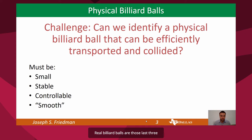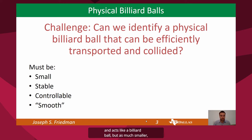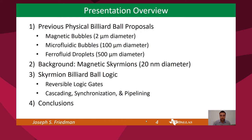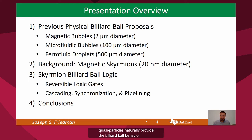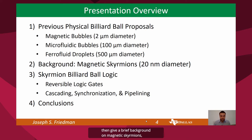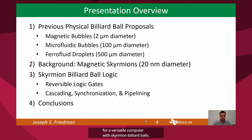Real billiard balls are those last three, but are not nearly small enough for a practical computer. The question then is: can we find a physical object that looks like a billiard ball and acts like a billiard ball, but is much smaller and can be moved with much less energy? The answer is yes. Over the last 40 years, there have been several proposals for microscale billiard balls, but they are not small enough for practical reversible computing systems. My group identified that magnetic skyrmions, which are nanoscale magnetic quasiparticles, naturally provide the billiard ball behavior with exceptional energy efficiency. I'll talk first about the previous proposals that inspired our work, then give a brief background on magnetic skyrmions, then explain our proposal for a reversible computer with skyrmion billiard balls.